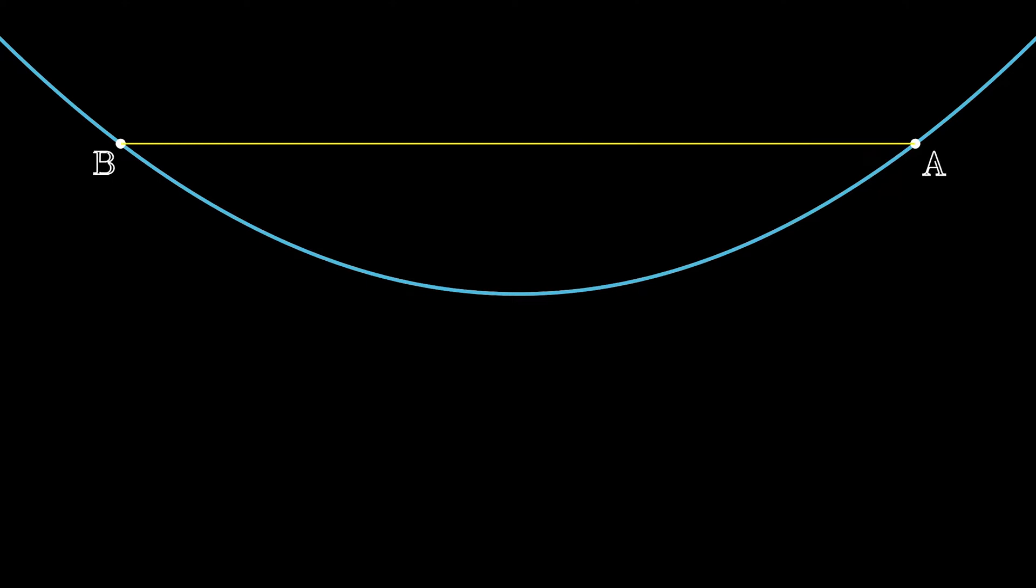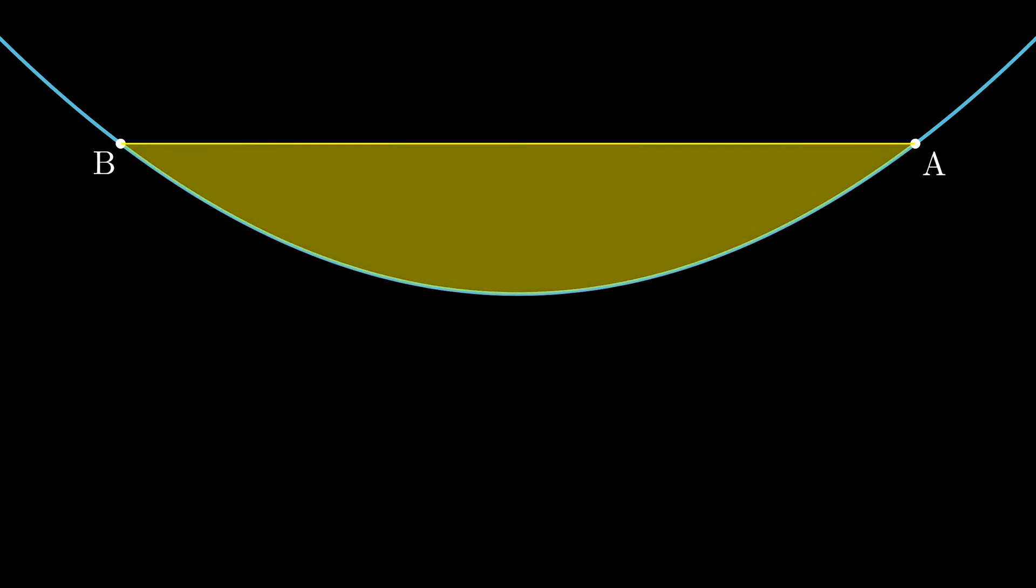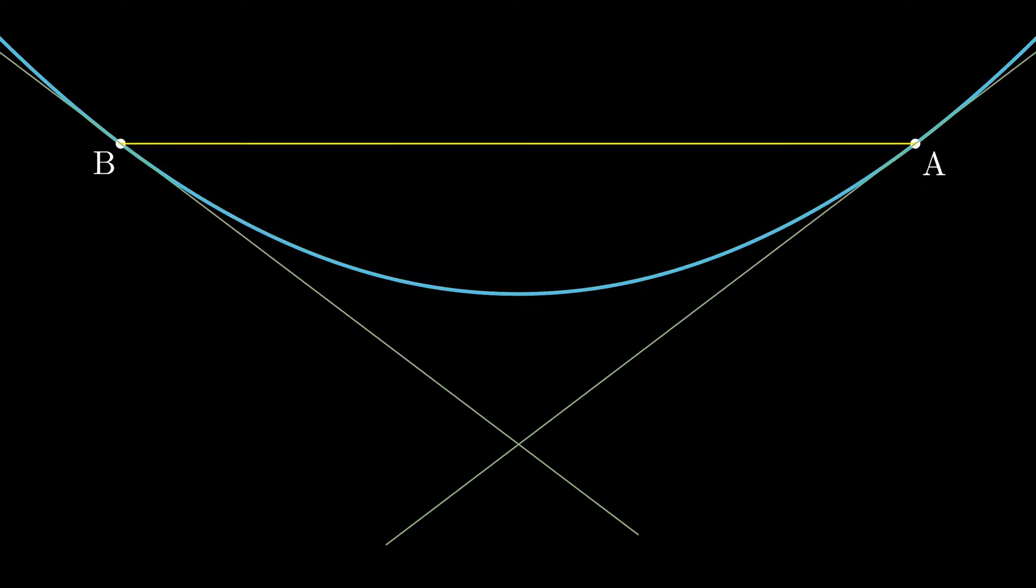Let the two points be A and B. And this is the area we are supposed to find. And the point of intersection of the two tangents is P.